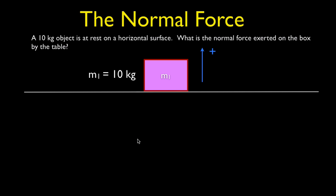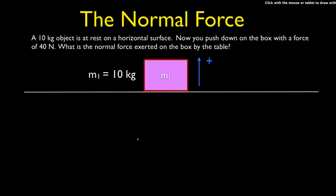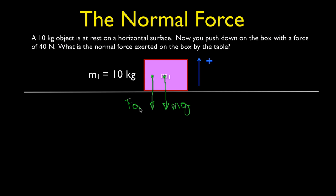Let's do a slightly different situation. We have the same object — 10 kilograms — sitting on a surface at rest, but now somebody is pushing down on the object with a force of 40 Newtons. Let's draw the forces again: the force of gravity mg pointing down, an applied force FA also pointing down, and since the box is not moving up or down, we have a normal force FN pointing up.